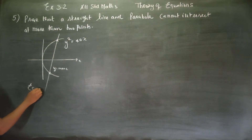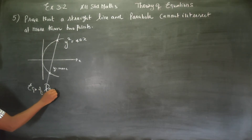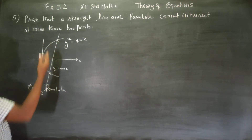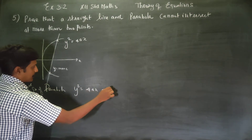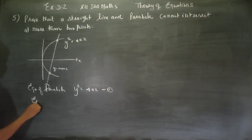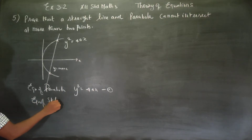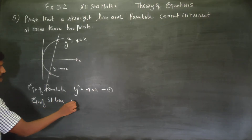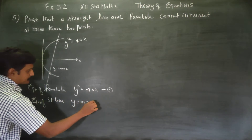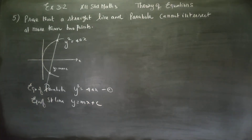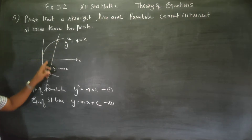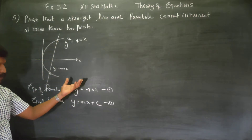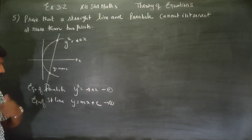Equation of parabola: general parabola open rightward. y squared is equal to 4ax — let it be equation 1. Equation of straight line: y is equal to mx plus c — let it be equation 2. To find the point of intersection, we have to solve equation number 1 and equation number 2.